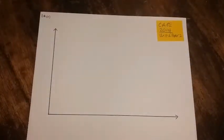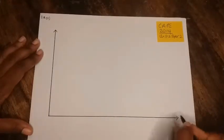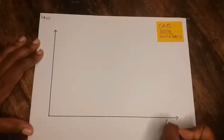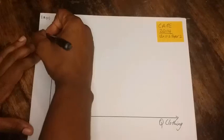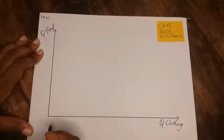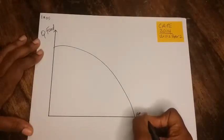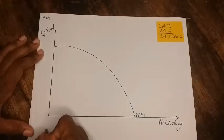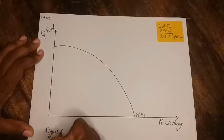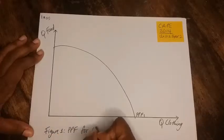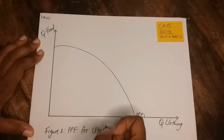For Part 2 they are asking us to draw and label a graph of the PPF for Utopia. I have my axes drawn, so I'll label the x-axis as quantity of clothing and the vertical axis as quantity of food. Then we're going to draw our curve concave to the origin — we'll call this PPF1. You can label it Figure 1: PPF for Utopia. That should give you your three marks.